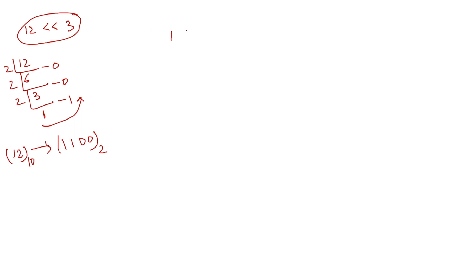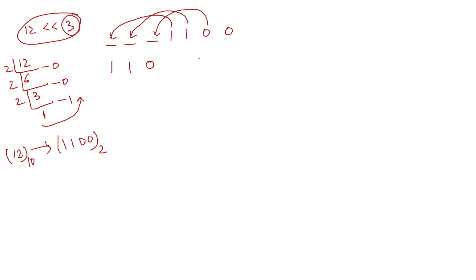Now I write 1100 and need to shift the bits towards the left by three positions. I mark three additional places. Each bit shifts three places to the left: 1 shifts to the seventh position, 1 to the sixth, 0 to the fifth, and 0 to the fourth. The first three bits left empty are filled with zeros, giving us 1100000.